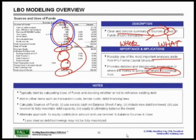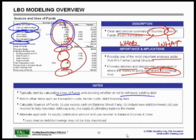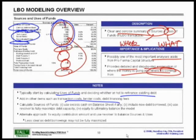You're going to get X dollars from your private equity firm, Y dollars from the banks, and you may use part of any excess cash on the books to fund this acquisition. Typically, you start by calculating uses of funds, decide whether or not to refinance existing debt, and add in other expenses — costs, tender costs, debt refinancing fees, transaction fees, etc.